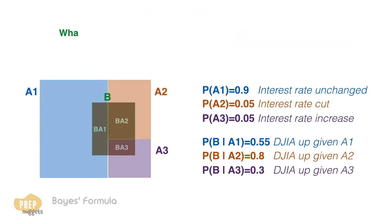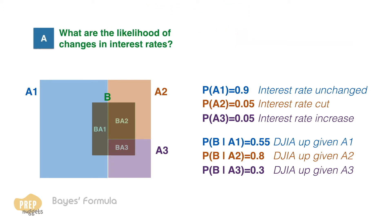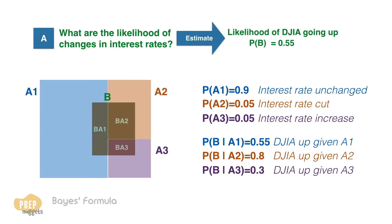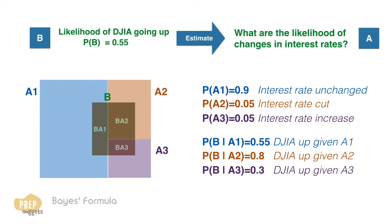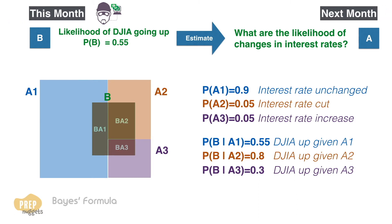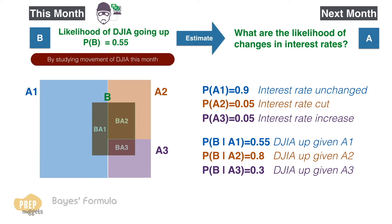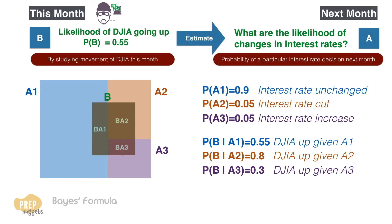In this example, we're using our estimations on the probabilities of interest rate decisions to help us estimate the probability of the Dow Jones going up. How about we reverse this process instead? Let's say there's a group of insiders who have a good guess of the central bank's interest rate decision for the following month. So they will front-run the market this month before the actual interest rate announcement in the following month. This means that by studying the movement of the Dow Jones this month, we can estimate the probability of a particular interest rate decision in the following month.